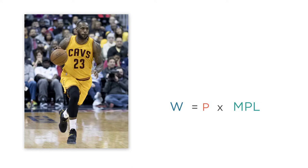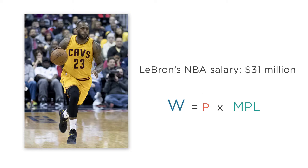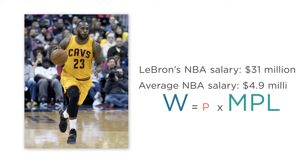That's why a player like LeBron James makes so much. His salary is just under $31 million per year. His wage is so high because his marginal product of labor is too. If you replace any player on your team with a guy like LeBron, your wins go through the roof. You may win a championship, and your revenue goes up too. So whereas the average NBA player makes $4.9 million per year, LeBron makes six times that. That's W equals price times MPL in action.